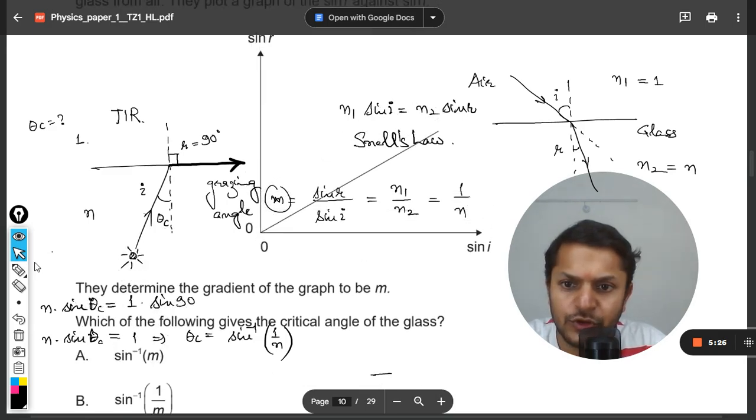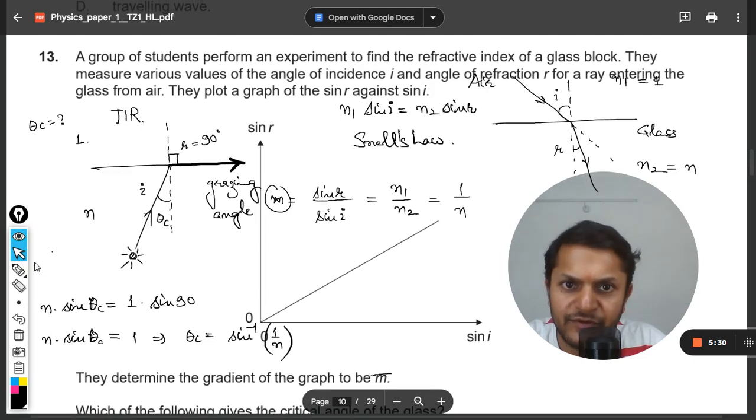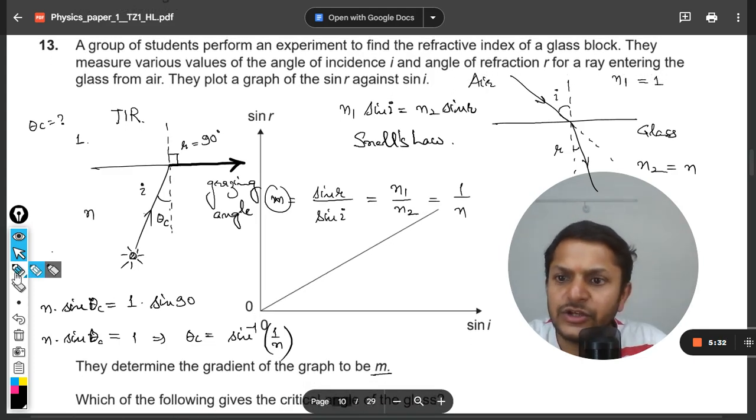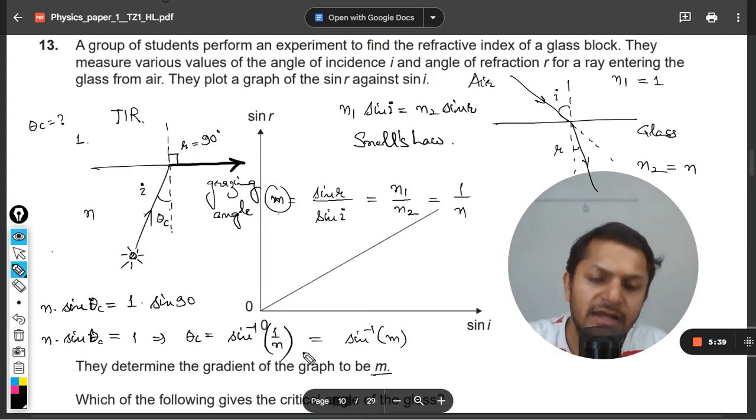Sine of m... So you want to find the theta critical in the terms of m, we have to find. Okay. So in the terms of m, so m is equal to one by n, so we can clearly say that it is sine inverse m.